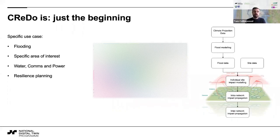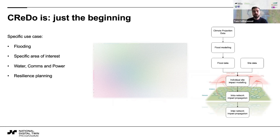At a high level, we're taking climate projection data — what the climate could be like in the future — mapping that through flooding models to flood conditions and scenarios, and putting that up against data from the asset owners, which we have to extract and transform. We figure out where the assets are and whether they've flooded. We can then calculate the impact within individual networks. The final step is joining them all together to show the impact across networks — because even though your own assets haven't flooded, the assets that supply power, communication, or cooling water to your asset might have gone down in a flood.